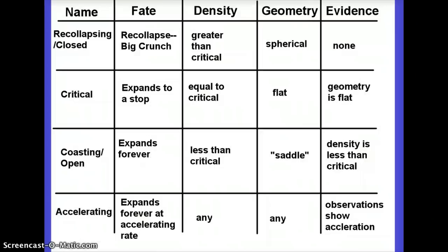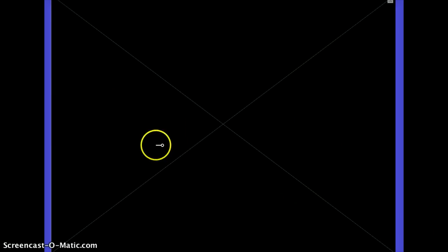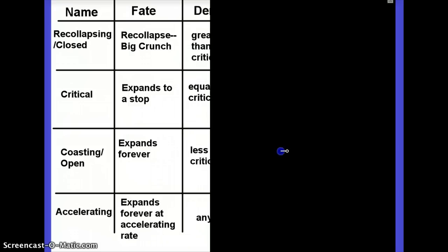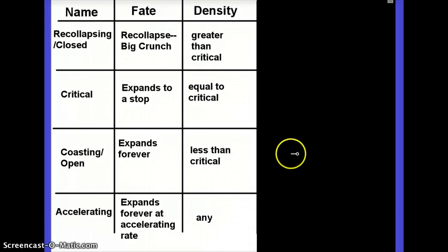I'm going to take us now to sort of a chart that lists all of the different things. We're not going to show you the whole thing right now, but just to sort of sum up what we've got so far, there's four scenarios, and these are the names that are used. We have the re-collapsing universe, which is also called the closed universe, and that's the one where we have that very, very high density, huge amounts of gravity. And gravity actually overcomes the expansion and causes a re-collapse and a big crunch.